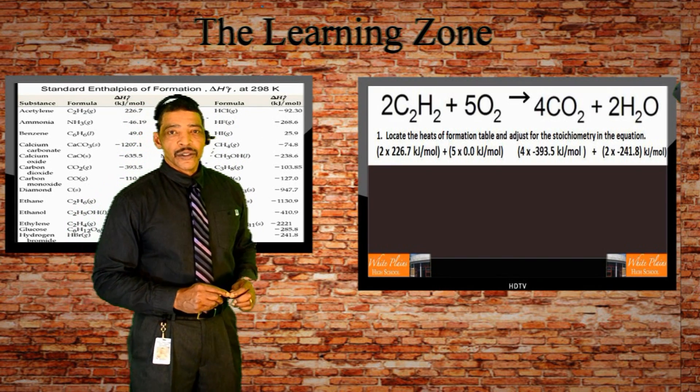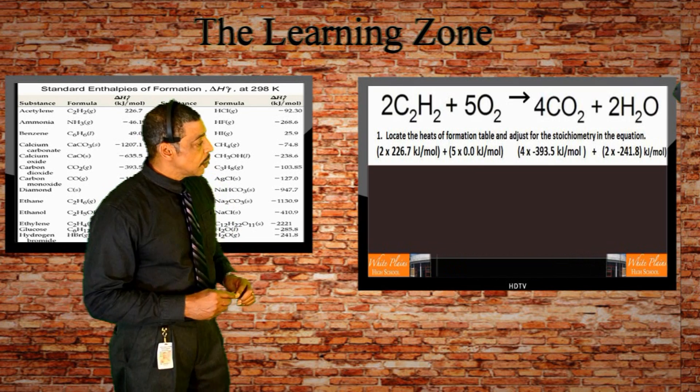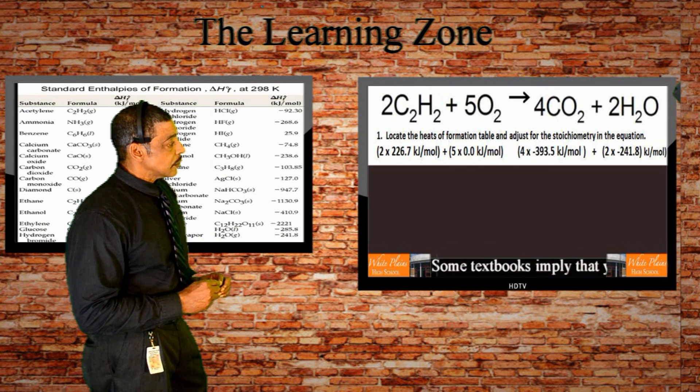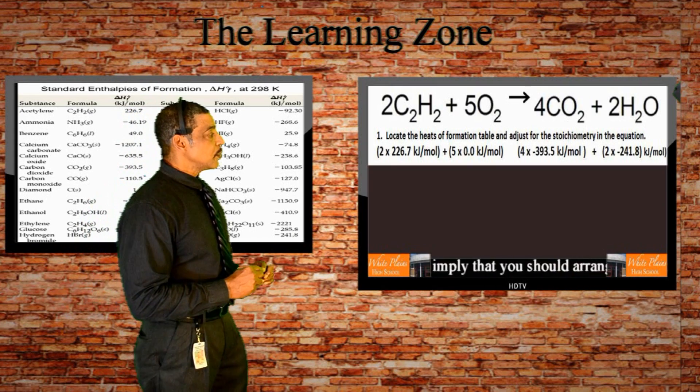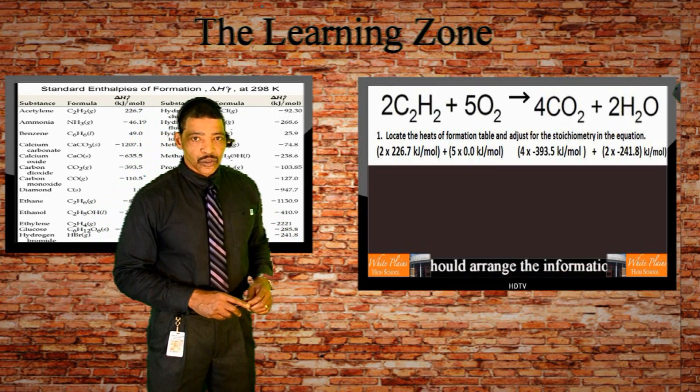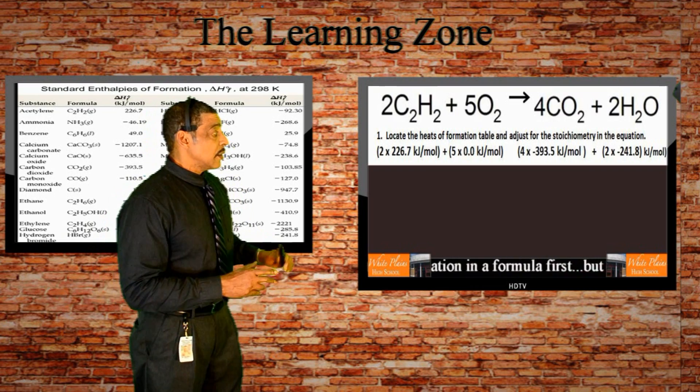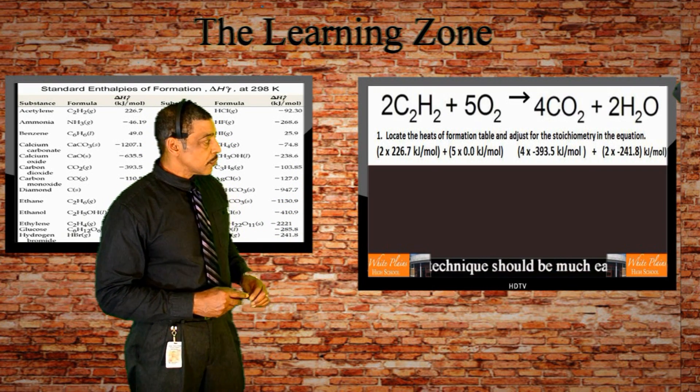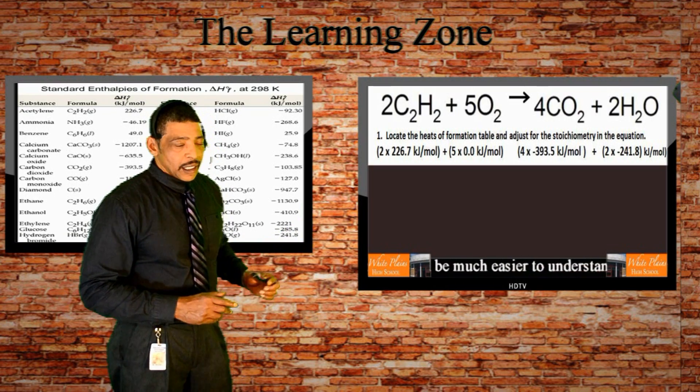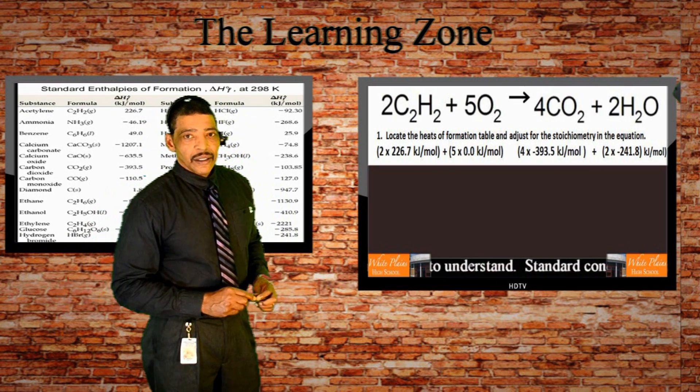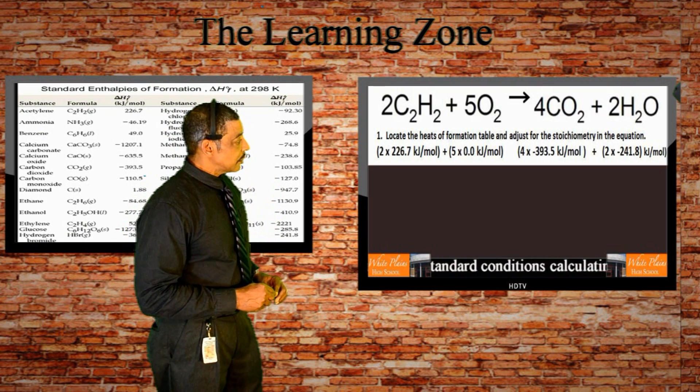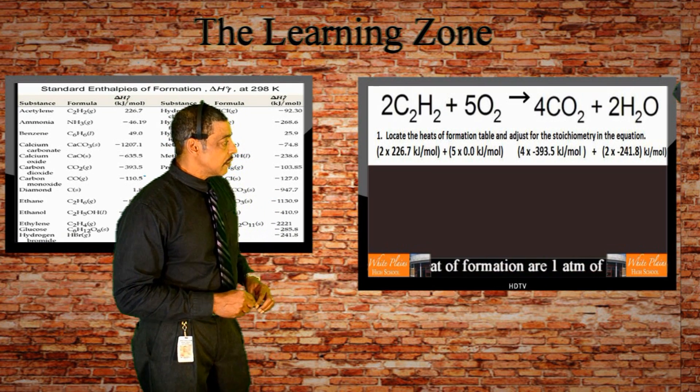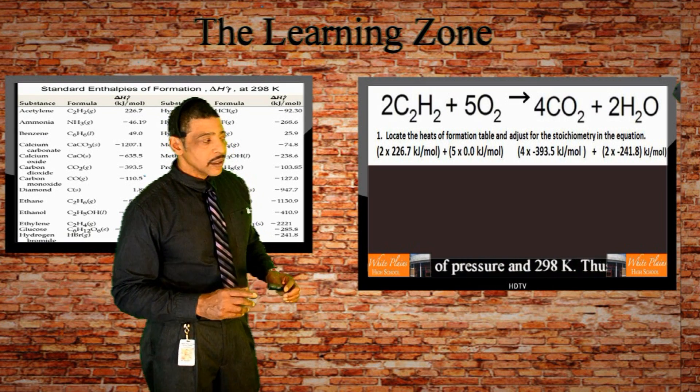Since the coefficient for ethyne is 2, we multiply the heat of formation of ethyne by 2: 2 times 226.7 kJ per mole. In actuality it is 2 moles times that value, which means that the moles will cancel out. And of course the enthalpy of the oxygen gas will simply be 5 times 0.0 kJ per mole, which is 0.